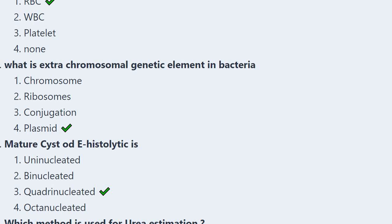Next: What is the extra-chromosomal genetic element in bacteria? Options: chromosomes, ribosomes, conjugation, plasmid. The correct answer is option 4, plasmid.